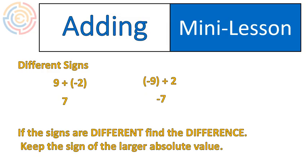And then you keep the sign of the larger absolute value. In other words, are there more negatives or are there more positives? In the first example, there were 9 positives and only 2 negatives, so our final answer would be positive. In the second example, we had 9 negatives and only 2 positives.